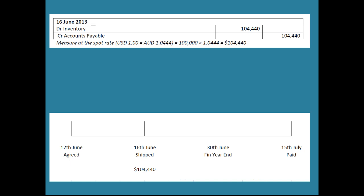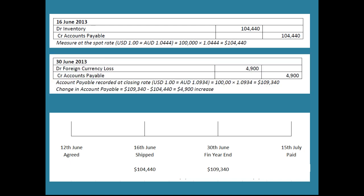At the 30th of June year-end, the accounts payable is recorded at the closing rate of 1.0934. So $100,000 US times 1.0934 gives $109,340. The liability started at $104,440 and is now $109,340 — it has increased. Per paragraph 28, we credit accounts payable to bring it up, and that difference of $4,900 is picked up through profit or loss as a loss, because the liability has gone up in value.